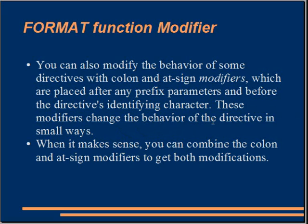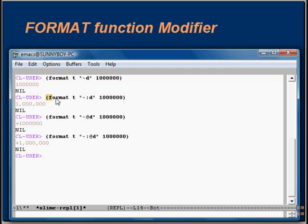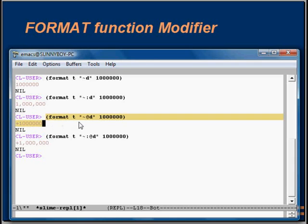These modifiers change the behavior of the directive in small ways. When it makes sense, you can combine the colon and at-sign modifier to get both modifications. The first example here is without any modifier and the output is just the same. The second format function has a colon modifier added — in the output we see commas. In the third, we added the at-sign modifier and get the sign of the variable. We can also add both modifiers to get output like a plus sign.